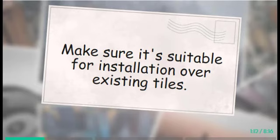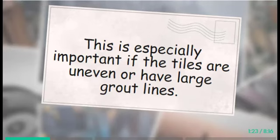Vinyl flooring: Choose the type of vinyl flooring you prefer - sheet vinyl, vinyl planks, or vinyl tiles. Make sure it's suitable for installation over existing tiles. Underlayment is optional, depending on the condition of the existing tile floor. You might need underlayment to create a smooth and even surface for the vinyl. This is especially important if the tiles are uneven or have large grout lines.